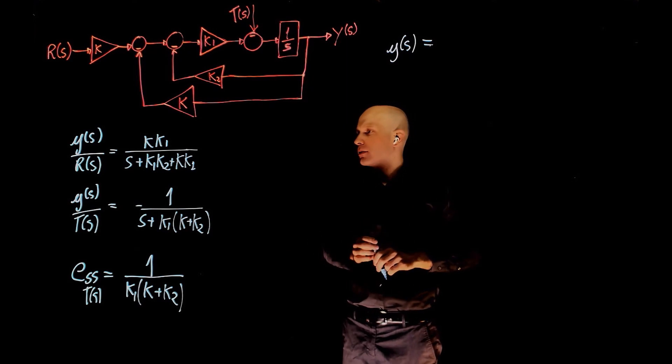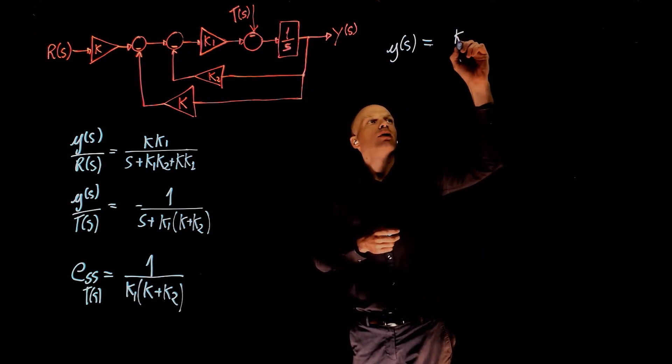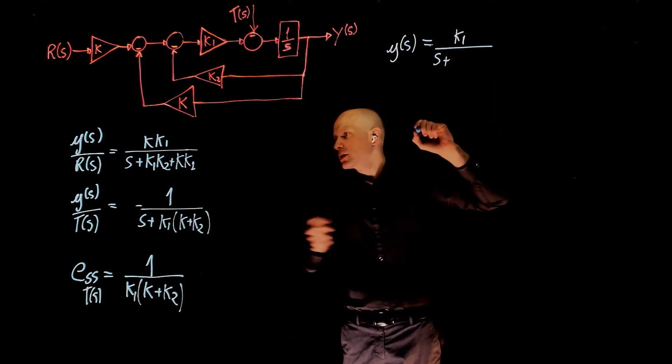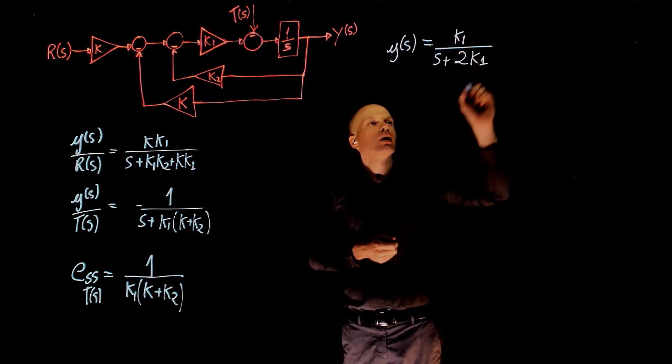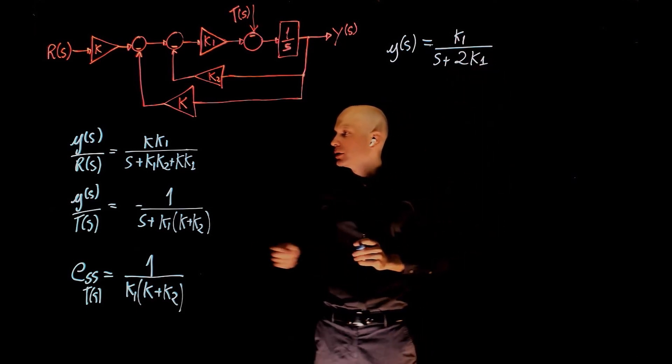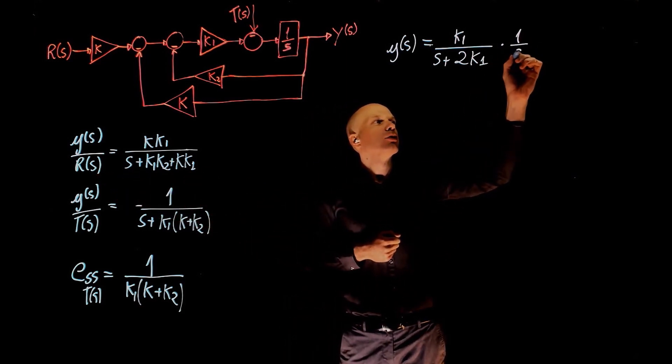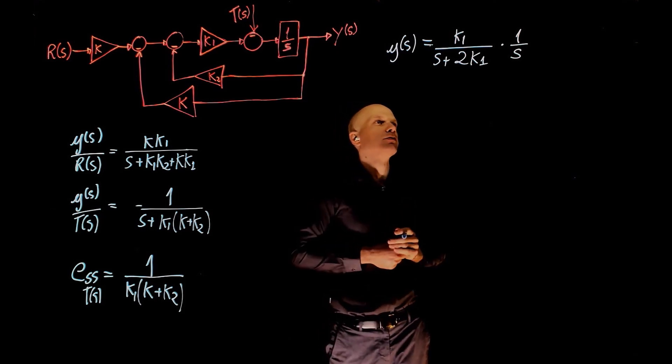Replacing k and k2 with 1, we are left with k1 over s plus k1 plus k1 plus 2 k1. So the input now, r of s is a step, so this multiplied by 1 over s gives y of s.